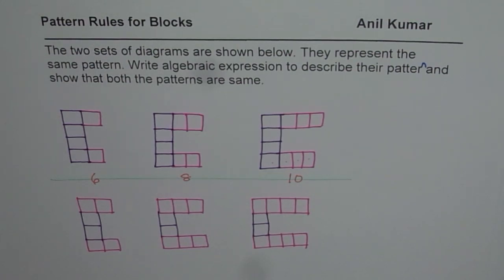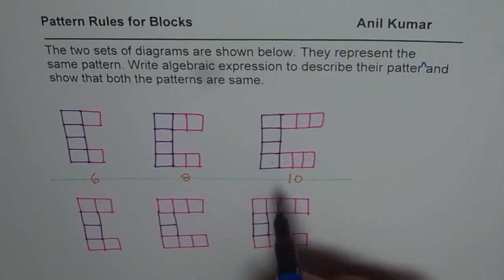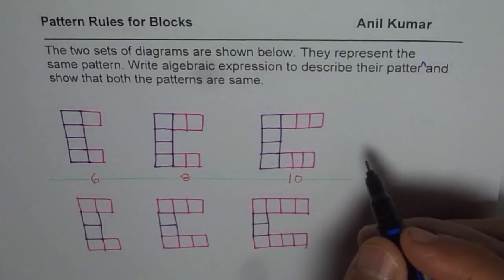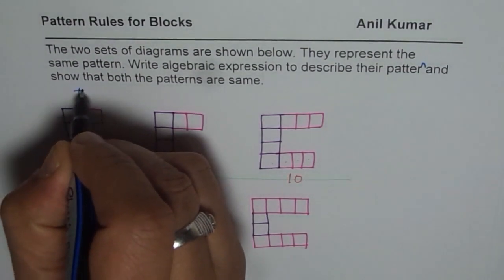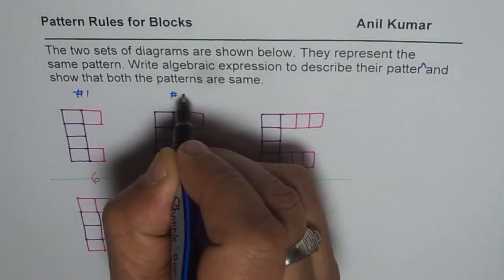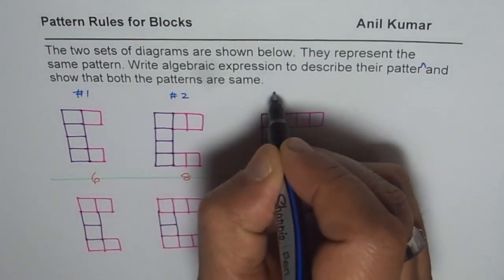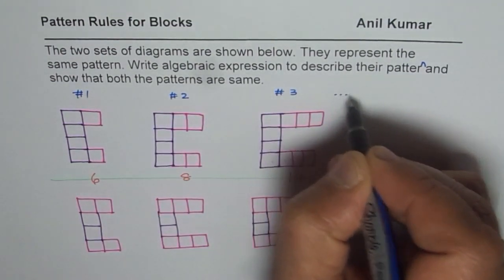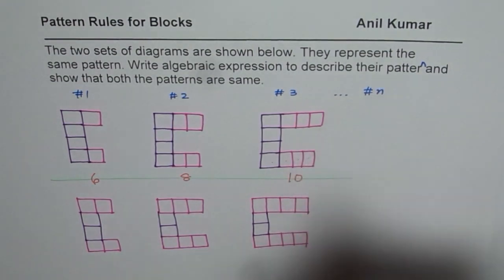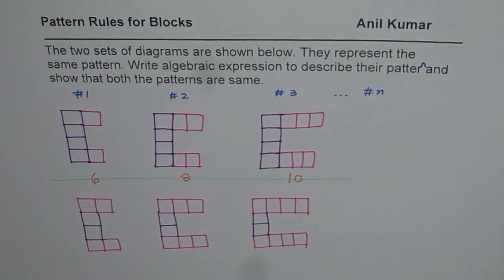The question for you is, how will you write a pattern rule for such a diagram? What we do normally is we number them. Let's say this is figure number 1, that is figure number 2, and this is figure number 3. Likewise, we will call this a variable n, so n represents the figure number for us.